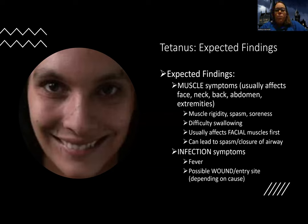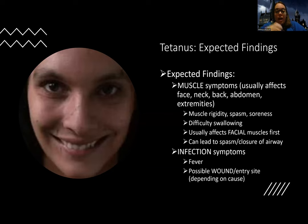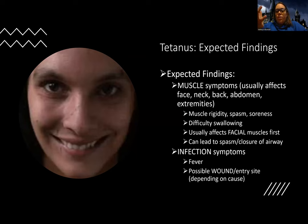Your book talks about how they can have a kind of crooked smile as one of the first symptoms. Because it's affecting the facial muscles first, we're also worried about the airway. Nursing priority: if tetanus can cause a rigid airway or spasms in the airway, what could happen? Well, the airway could close. So we're really concerned about maintaining a patent airway with this patient.